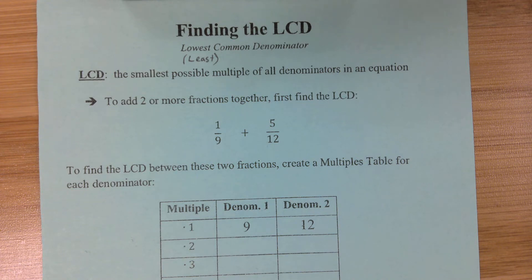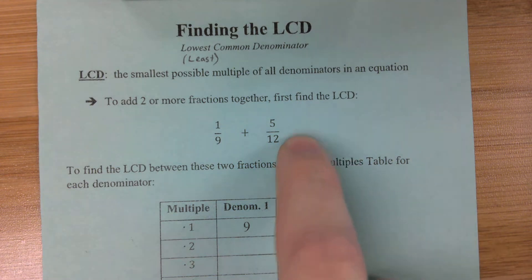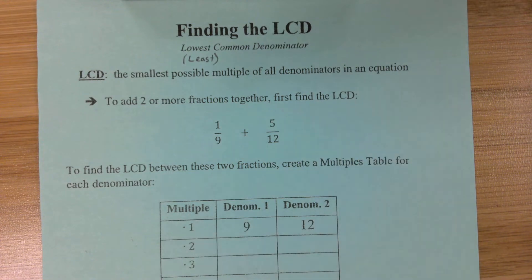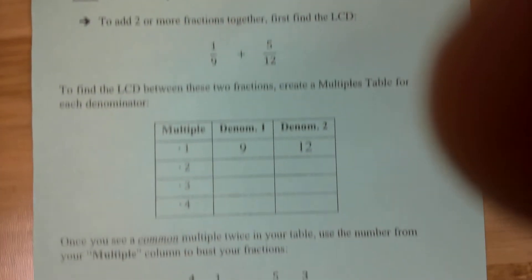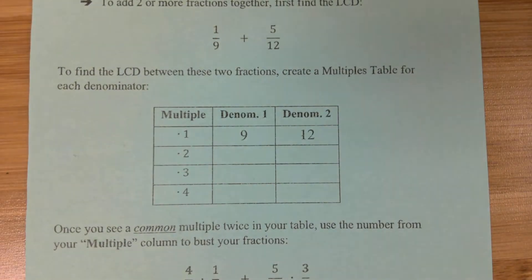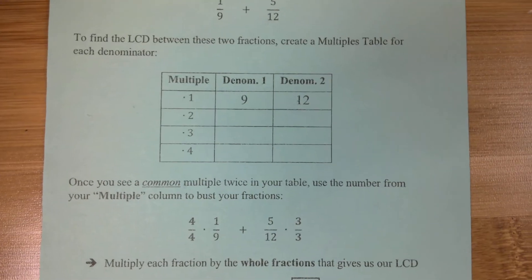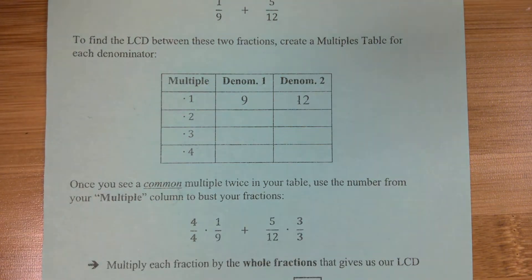So, like we mentioned in the warm-up, if we want to add two fractions together, we have to first find the lowest common denominator between those two fractions. And the way we can do that is with a nice convenient multiples table. That's what this is right here. So if we want to find the LCD between these two fractions, all we have to do is list out the multiples for each denominator until we find a matching pair of multiples. I know that sounds kind of like a lot because there's a lot of math words in there, but once we go through this, you'll see exactly what I mean.